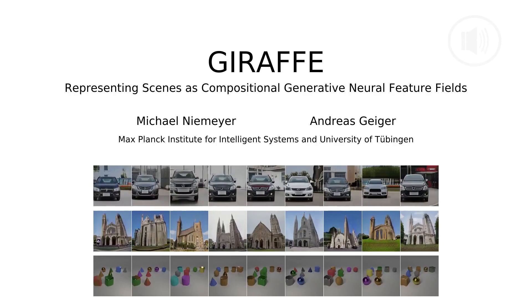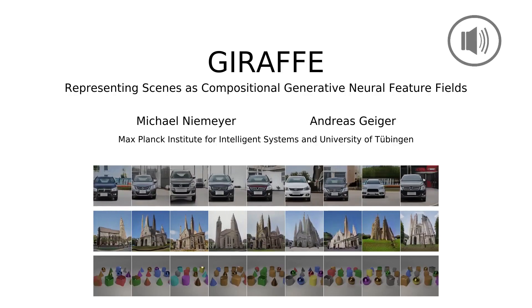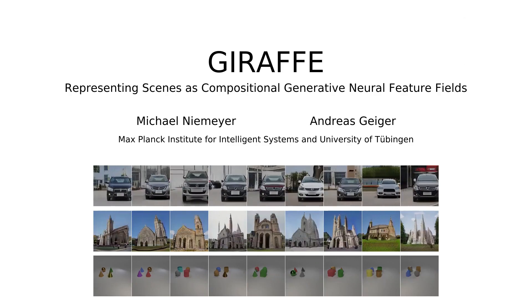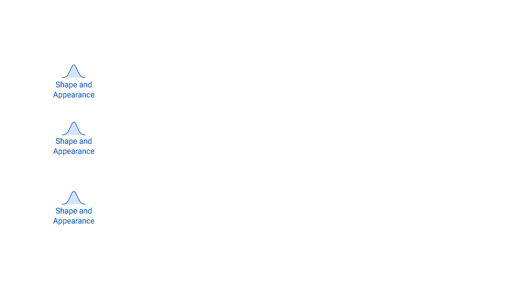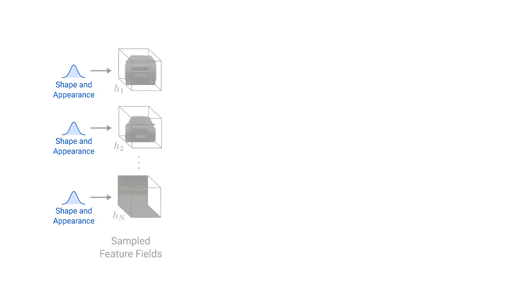Hi, I'm Michael, and in the following I'll present Giraffe: representing scenes as compositional generative neural feature fields. We start off by sampling individual shape and appearance codes for each object in the scene and for the background. These will give us individual feature fields which all live in a canonical space. A feature field is a function which predicts a density value and a feature vector for a given 3D location and a viewing direction. Note that here we show RGB instead of features for clarity.